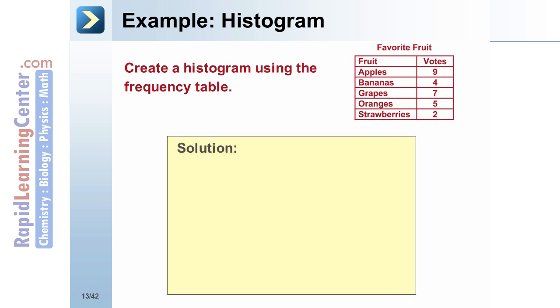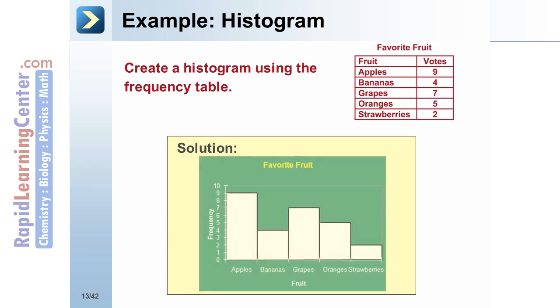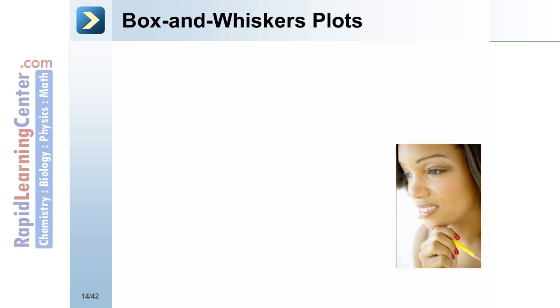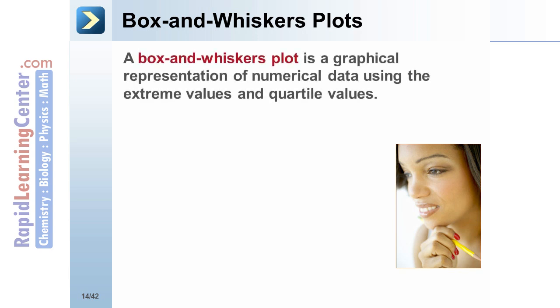Solution: Create a histogram titled "Favorite Fruit" with sections labeled for apples, bananas, grapes, oranges, and strawberries. Apples received 9 votes, so the apple bar will have a frequency of 9. Bananas received 4 votes, so its bar will have a frequency of 4. Grapes received 7 votes, so the grape bar will have a frequency of 7. Oranges received 5 votes, so its bar will have a frequency of 5. Lastly, 2 people voted for strawberries, so that bar will have a frequency of 2.